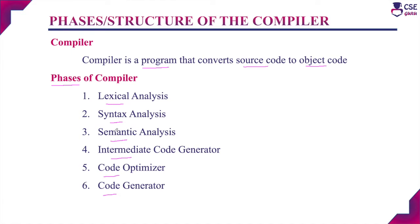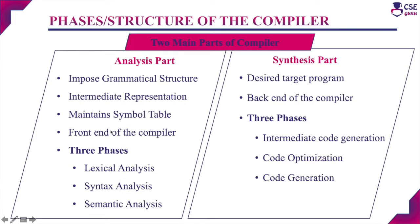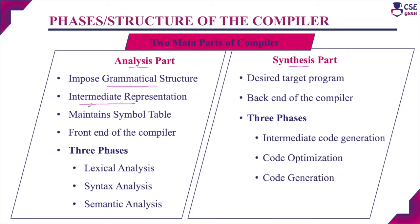In each phase, the compiler transforms one representation of the source program to another representation. The six different phases are divided into two main parts: the analysis part and the synthesis part. In the analysis part, the compiler accepts the source code as input, scans the complete source code, divides it into different constituent pieces, and imposes a grammatical structure on them. This grammatical structure helps create the intermediate representation of the source program, which is used as a reference by the synthesis part. The analysis part also identifies syntax and semantic errors present in the source program.